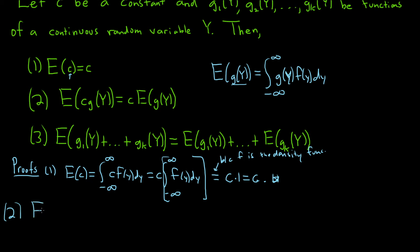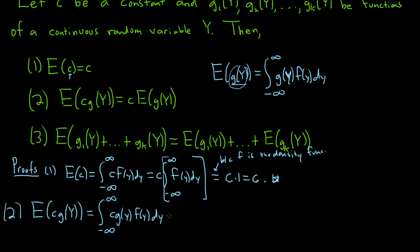Proof 2: We have the expected value of c times g of y. We're thinking of c times g of y as our function, so we just replace it in the formula. This is equal to the improper integral from negative infinity to infinity of c times g of y times f of y dy. Since c is a constant, we can pull it out of the integral, giving us c times the improper integral from negative infinity to infinity of g of y times f of y dy. And this is just c times the expected value of g of Y. Everything follows from the linearity properties of the integral.